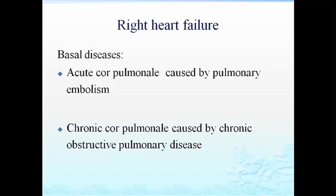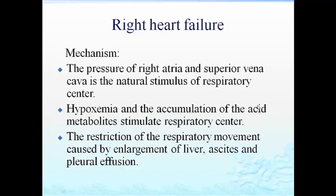Right heart failure causes dyspnea through different mechanisms. Acute cor pulmonale is caused by pulmonary embolism, and chronic cor pulmonale by chronic obstructive pulmonary disease. The elevated pressure of the right atrium and superior vena cava stimulates the respiratory center; hypoxemia and accumulation of acid metabolites also stimulate the respiratory center; and restriction of respiratory movement caused by liver enlargement, ascites, and pleural effusions further contribute.